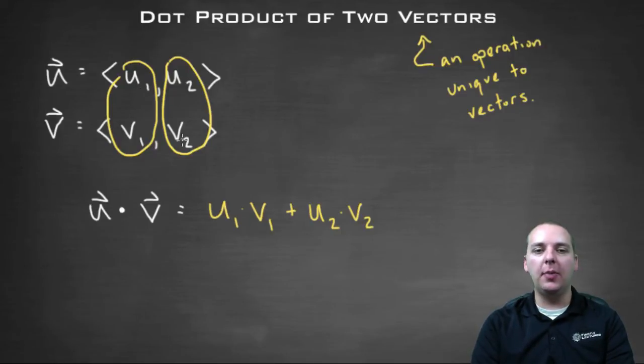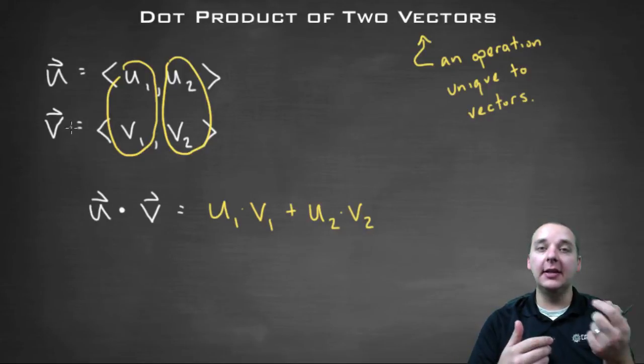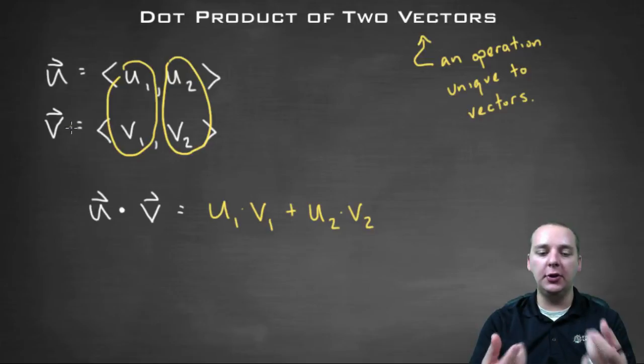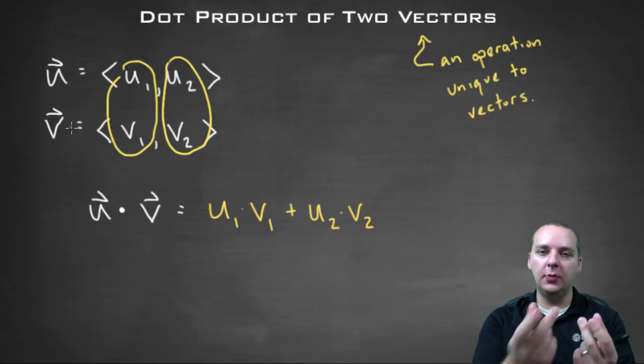One thing I'll make you aware of right off the bat, take a look. This answer is not a vector. That's very odd, because most operations are what we call closed. Meaning if you take an integer and another integer and you add them, your answer is an integer. Well here, that's not the case. You have a vector dotted with a vector, but your answer is a scalar.